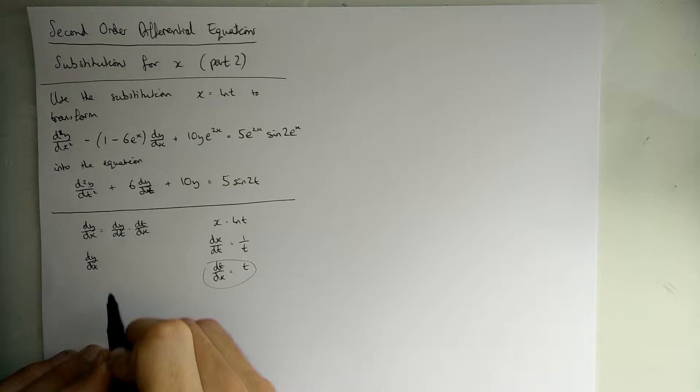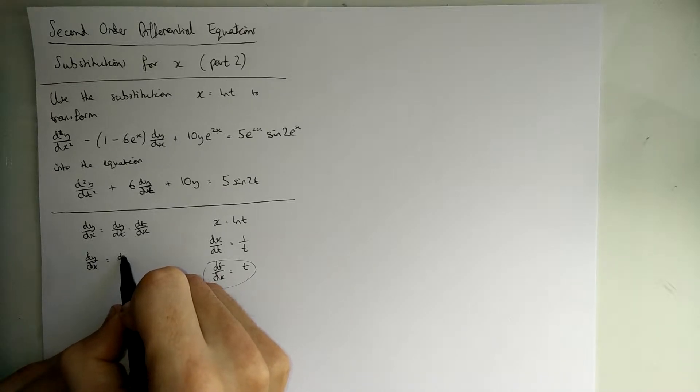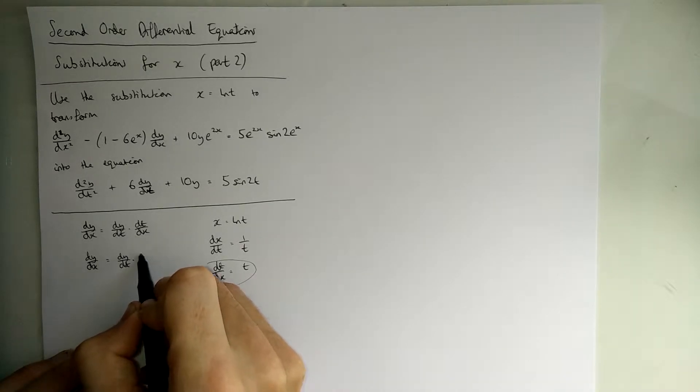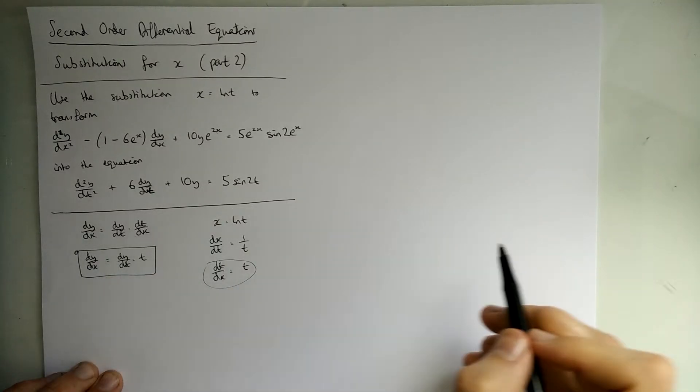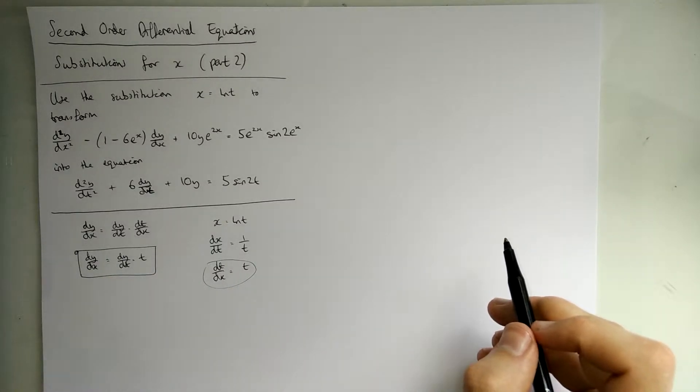So, we can plug this thing over here. That's quite nice, isn't it? dt/dx is just t. And that's the first bit done. We've now got dy/dx in terms of y's and t's.